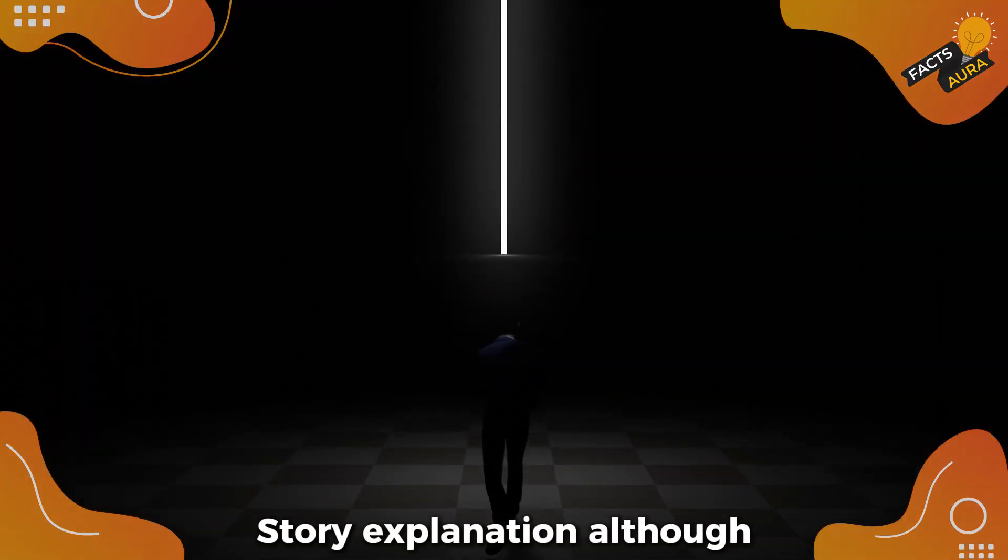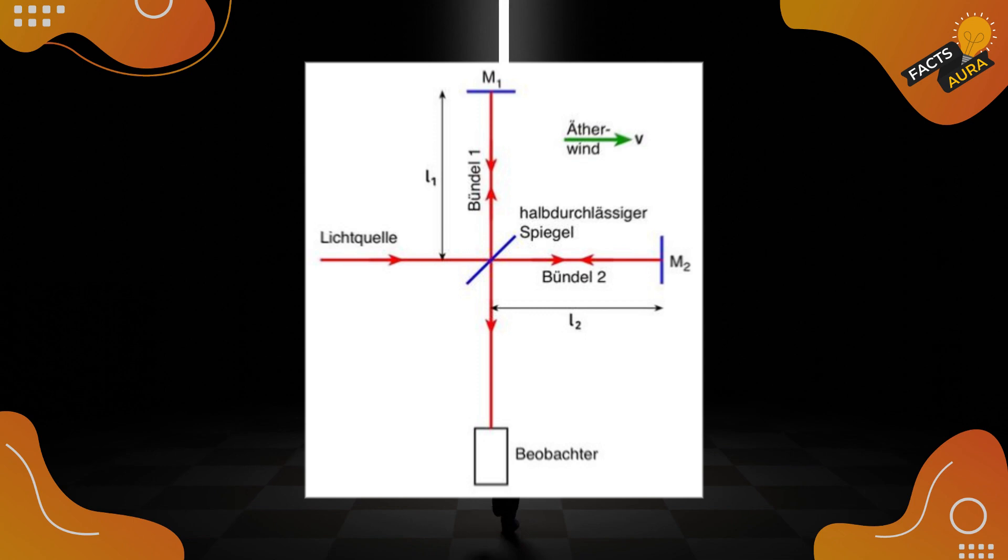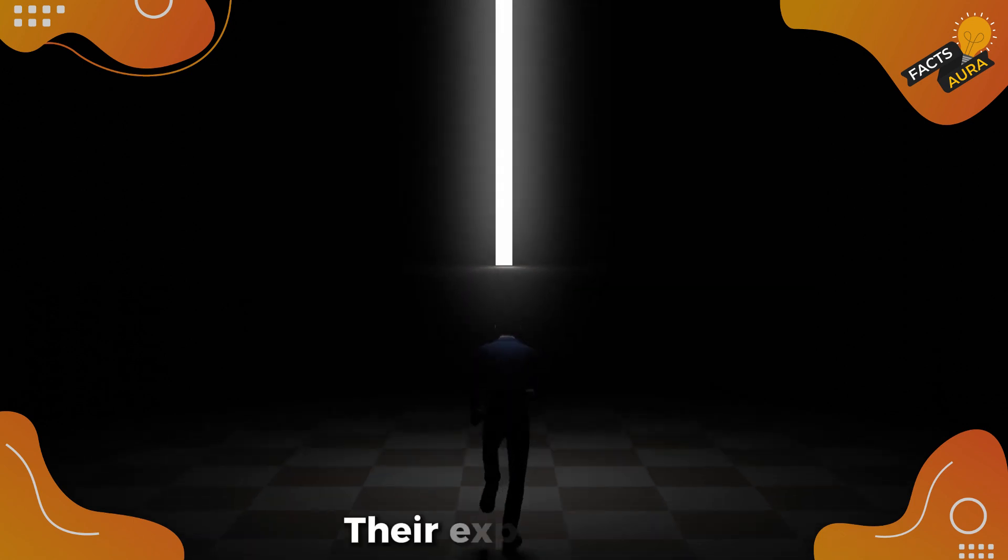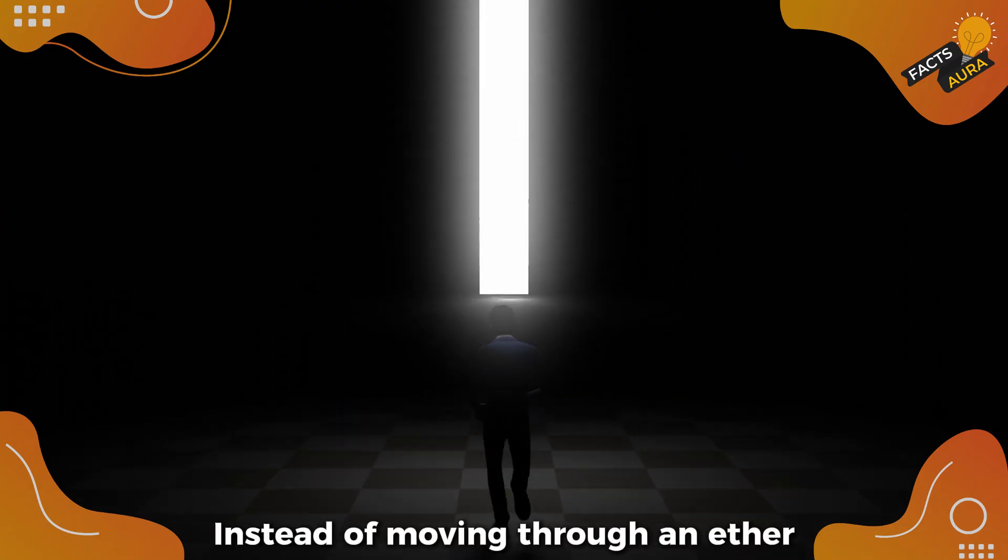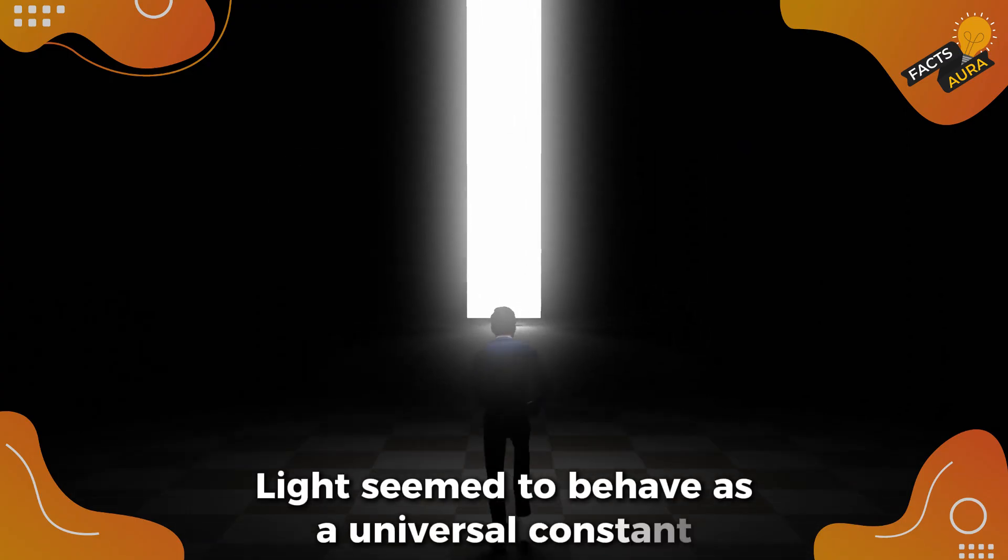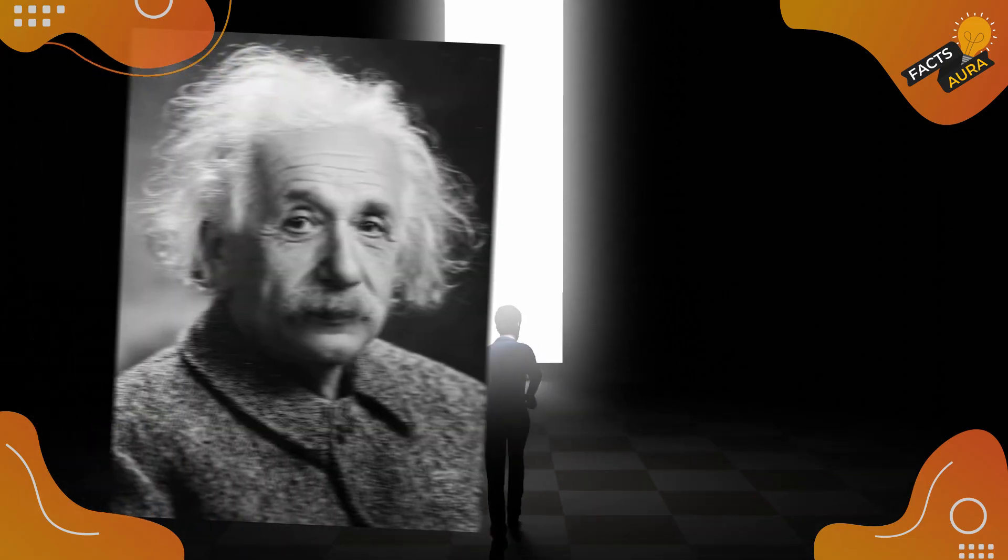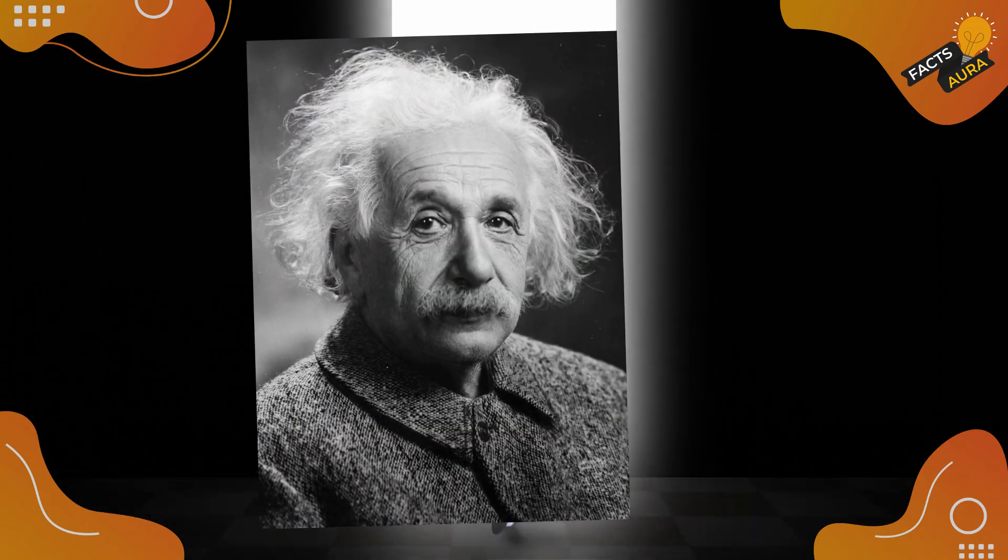Although Michelson and Morley didn't find what they were looking for, their experiment opened doors to new ways of thinking about light. Instead of moving through an ether, light seemed to behave as a universal constant, leading Einstein to develop his theories on relativity.